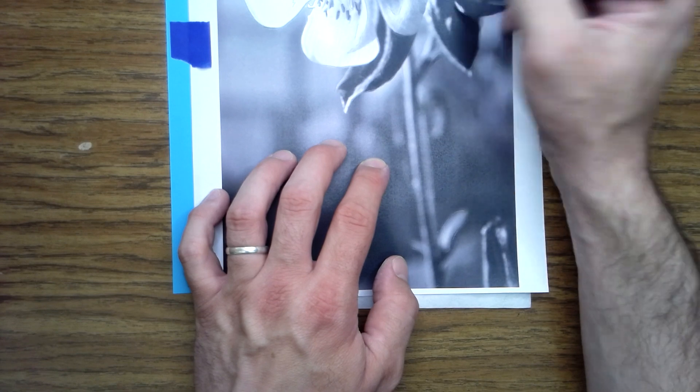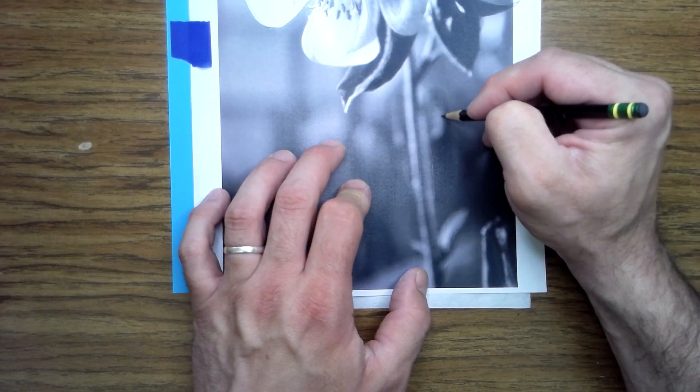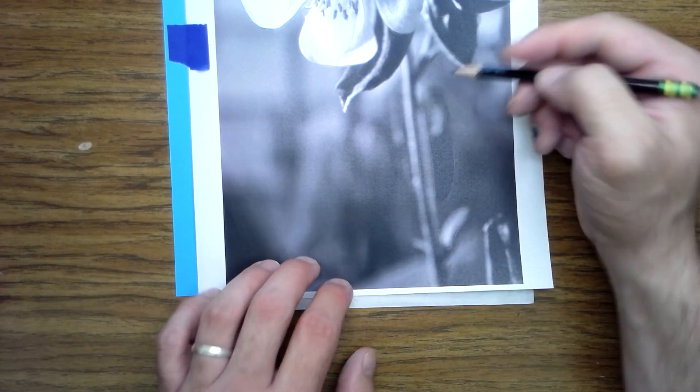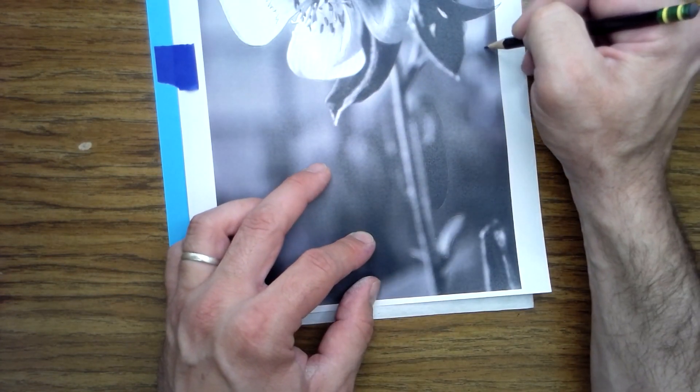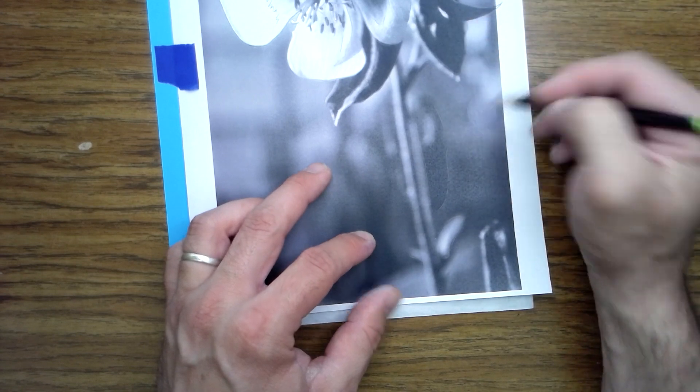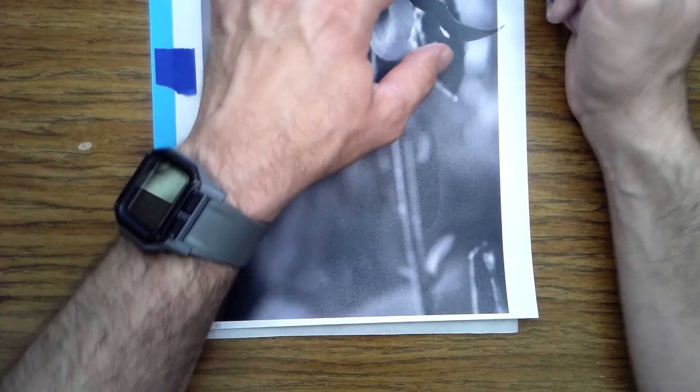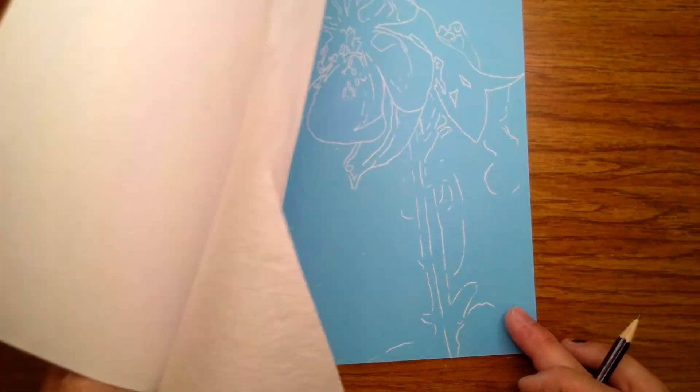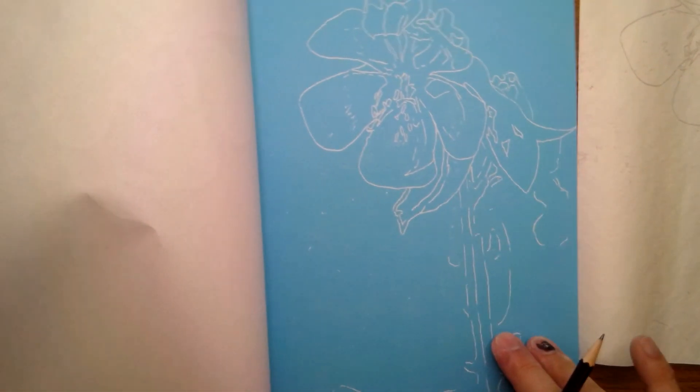So we're transferring the final first. I'm just lightly blocking in some of those dark shapes in the background and some of those light shapes. Kind of see that blob of light area there, just kind of putting that blob in there.